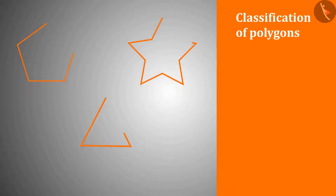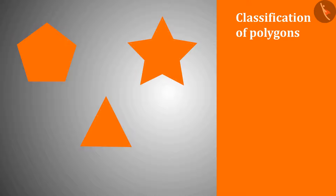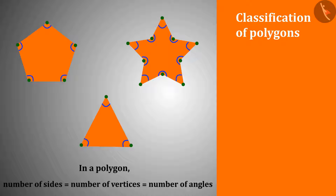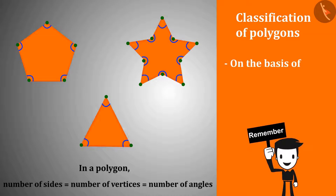Looking at polygons, we find that the number of sides, vertices and angles in each polygon are equal. On the basis of sides, we classify polygons.